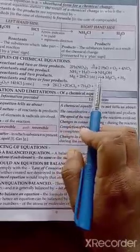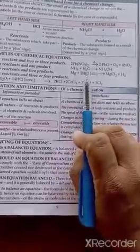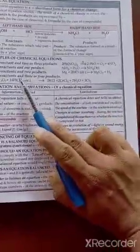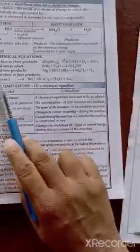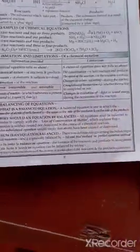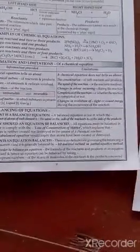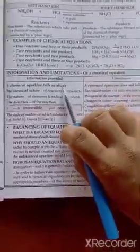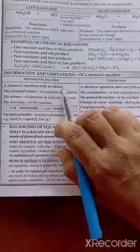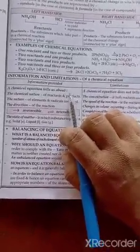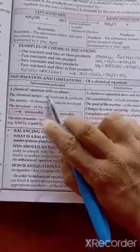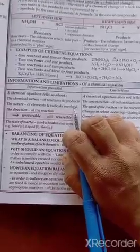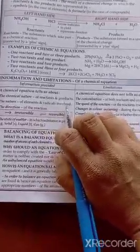Two reactants and three or four products. We have to put a very lengthy equation. But there are some limitations for writing this chemical equation in this way. What are the information that we are getting and what are the limitations of writing chemical equation in this way. A chemical equation tells us about what are the things we can get. We will get about the reaction from the chemical equation. The chemical nature of reactants and products. The nature of elements and radicals involved. And direction also. From which direction it is taking place.